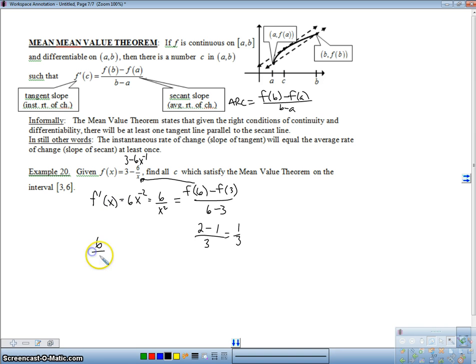So, I'm looking for a C such that F prime of C, which is 6 over C squared, is equal to 1 third. So, I'm going to divide both sides by 6. And I'm going to get C squared equals 18 because I've got to flip it over and multiply. And I'm going to get C is equal to plus or minus root 18.